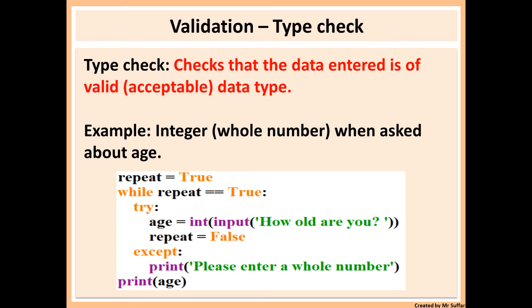Finally, we've got a type check. This checks that the data entered is of valid data type. For example, we need to check that the age is an integer and not a string or other data type. Here we've got repeat equals true while repeat is equal to true. This will repeat the while loop as long as the variable repeat is true. This will allow us to start the while loop. Now we have try. Try is used to check something and stop the program from crashing.